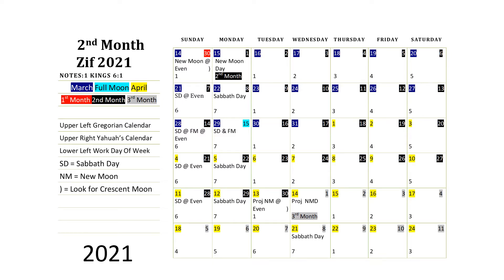If you're here for the first time, you can download one of these calendars or a calendar from calendarlabs.com. If you've been here before and have been following along for the last few months, we normally get the blank calendar from the previous month and flow from one month right into the next. So let's get started.